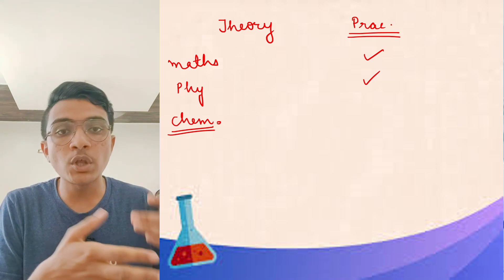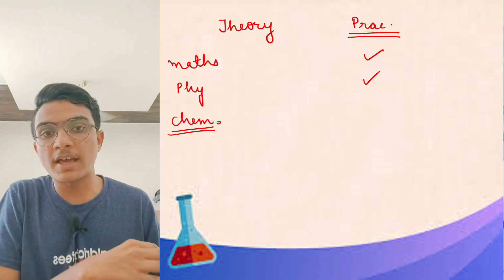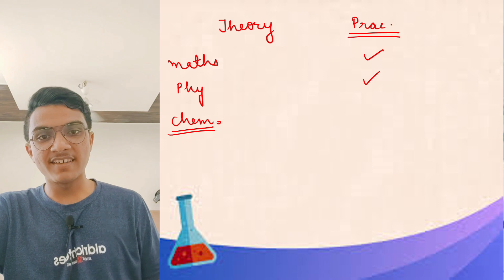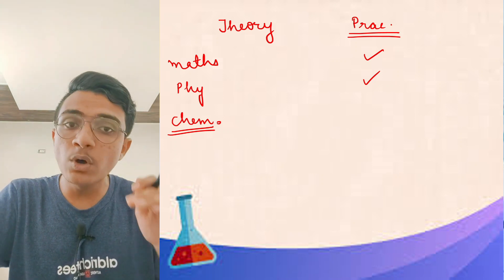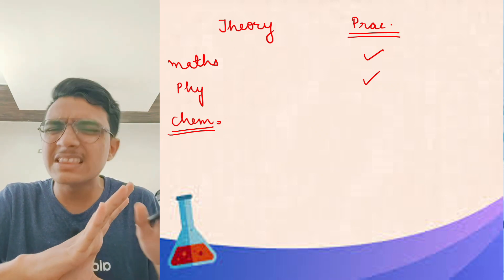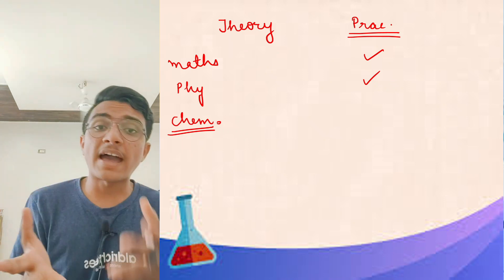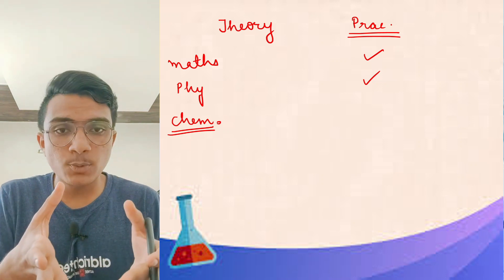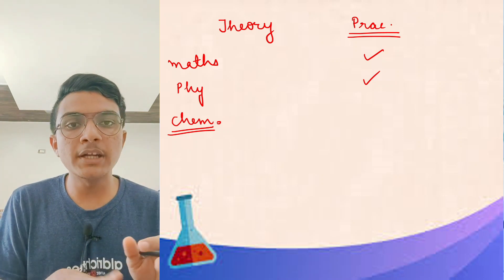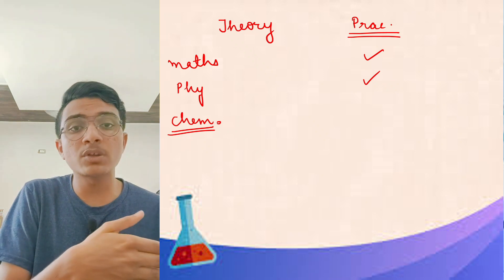When you see different examples — if you have this acid you make this product, another acid you make another product — practicing those concepts makes everything crystal clear. Now in inorganic chemistry, there are a lot of concepts, no calculations, and you have to understand many facts and exceptions. In JEE or NEET preparation over two years, there are many reactions involving color changes, precipitates, endothermic and exothermic processes — a lot of things to remember.